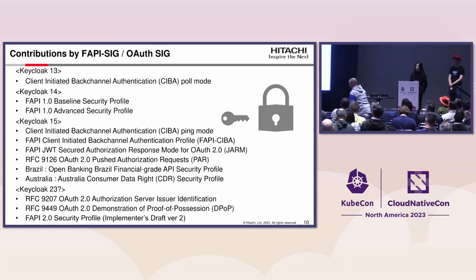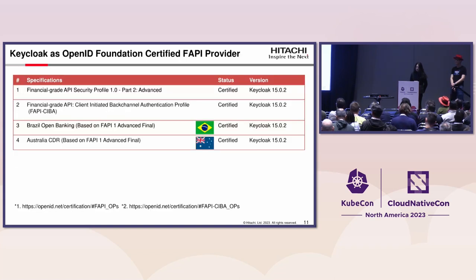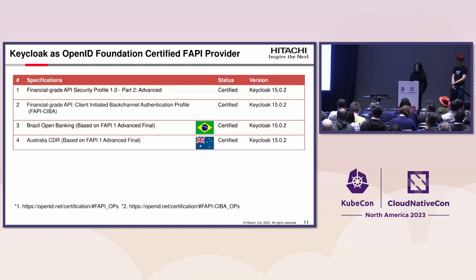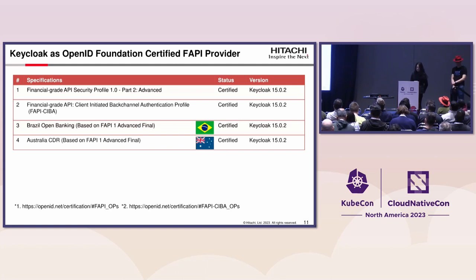As a result of these activities, Keycloak got certified as a FAPI OpenID Provider. Keycloak 15 got the following four types of certification: FAPI 1.0 Final Part 2, FAPI SIG, Open Banking Brazil, and Australia CDR.